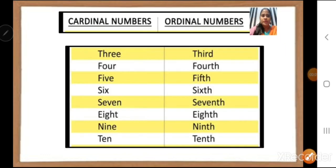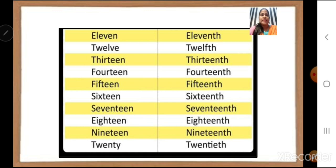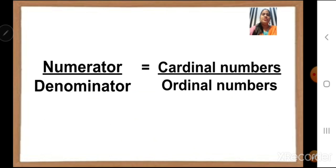We have learnt about cardinal numbers and ordinal numbers. Cardinal numbers are 3, 4, 5, 6, 7, 8, 9, 10. Ordinal numbers are the numbers which show position or place, like 3rd, 4th, 5th, 6th, 7th, 8th, 9th, 10th, then 11th, 12th, 13th, 14th, 15th, 16th, 17th, 18th, 19th, 20th. Why are these important? Because when we write a fraction as numerator upon denominator, in numerator we write the cardinal numbers and the denominator represents ordinal numbers. That is why it is important.